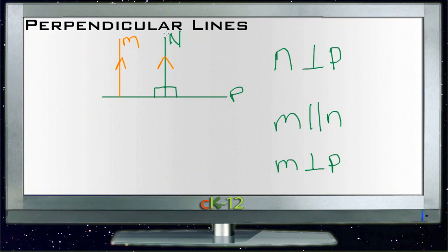So here, if M and N are parallel, and N is perpendicular to P, then M is also perpendicular to P. Again, very similar to some of the rules we ran into for parallel lines.